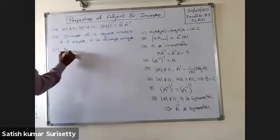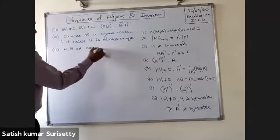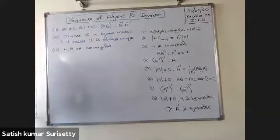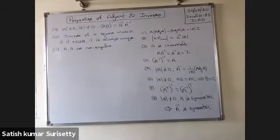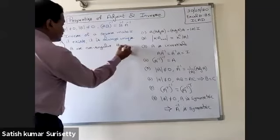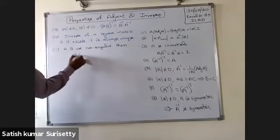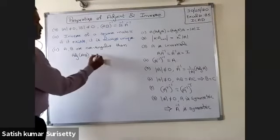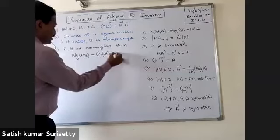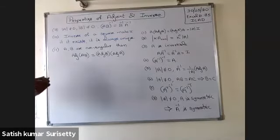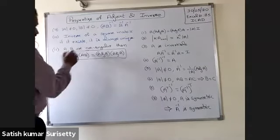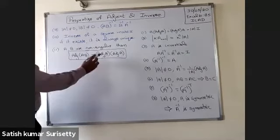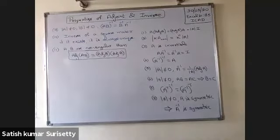If A and B are non-singular square matrices of the same order, then adjoint of AB equals adjoint of B into adjoint of A. This is very important — when A and B are non-singular, the adjoint of the product equals the product of the adjoints in reverse order.